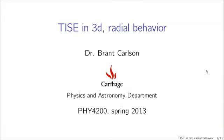Continuing our discussion of the time-independent Schrödinger equation in three dimensions in spherical coordinates, let's talk about the radial behavior. We saw that the angular behavior in theta and phi gave rise to spherical harmonics, but we left off the radial part. So let's see what the radial part looks like and what it gets us.